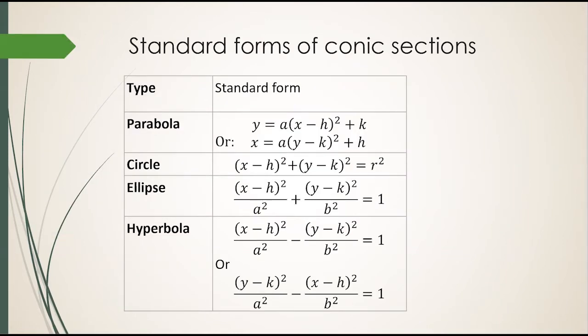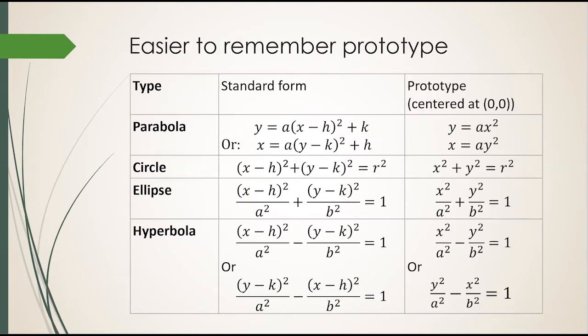Here are the standard forms of the conic sections: the parabola, the circle, the ellipse, and the hyperbola. The full standard forms are a little too busy and hard to remember, so I suggest that you use what I call the prototypes instead. Here are the prototypes, basically centered at 0 comma 0. If you want to center somewhere else at some other h comma k, just replace x with x minus h and y with y minus k.